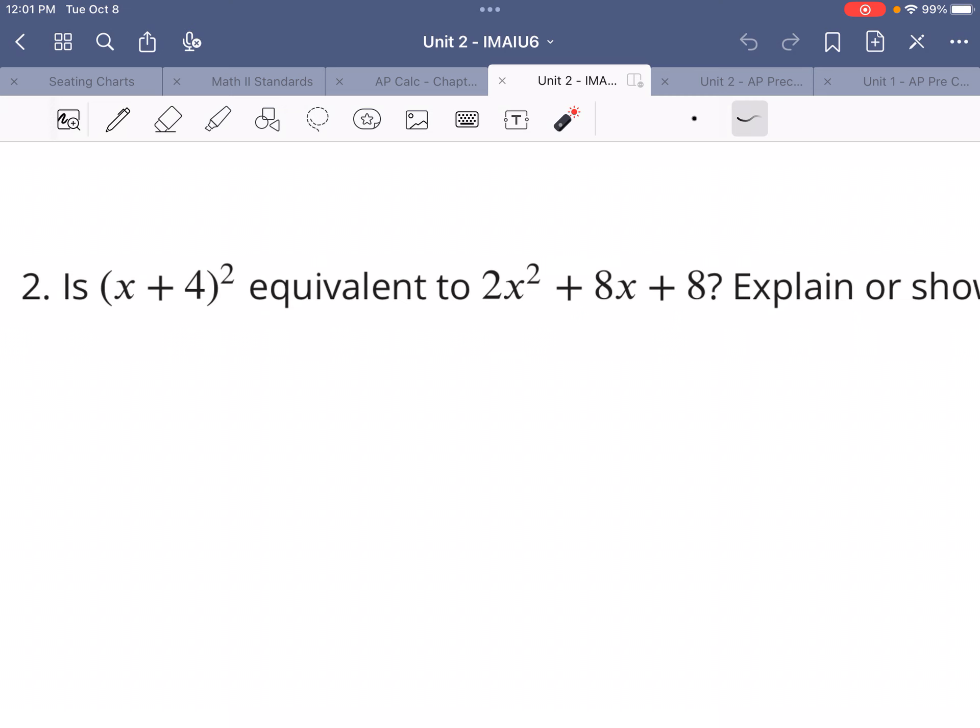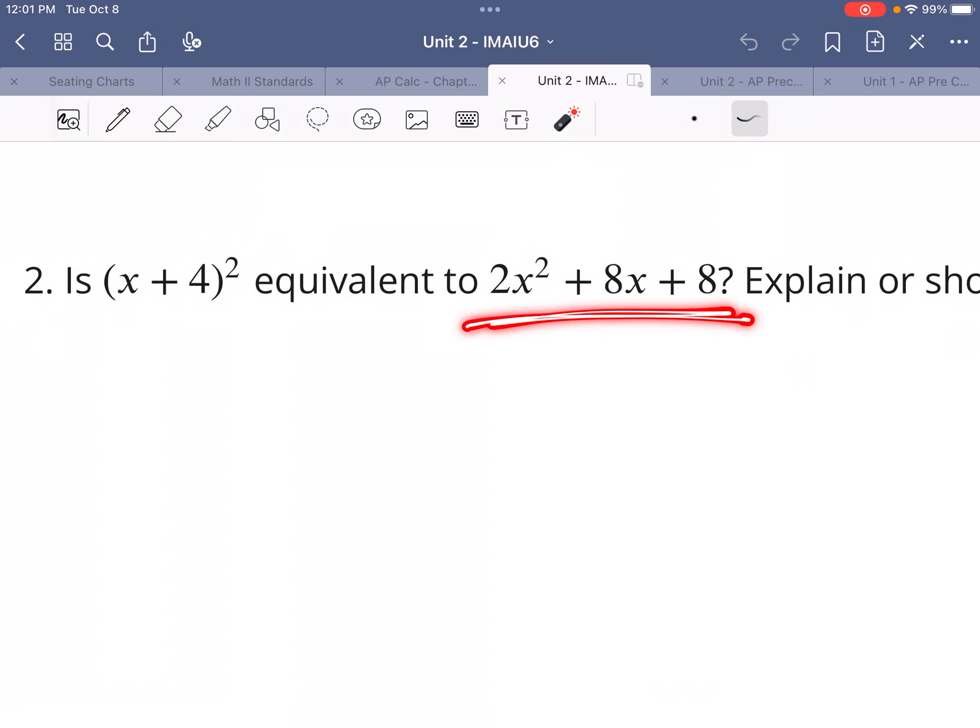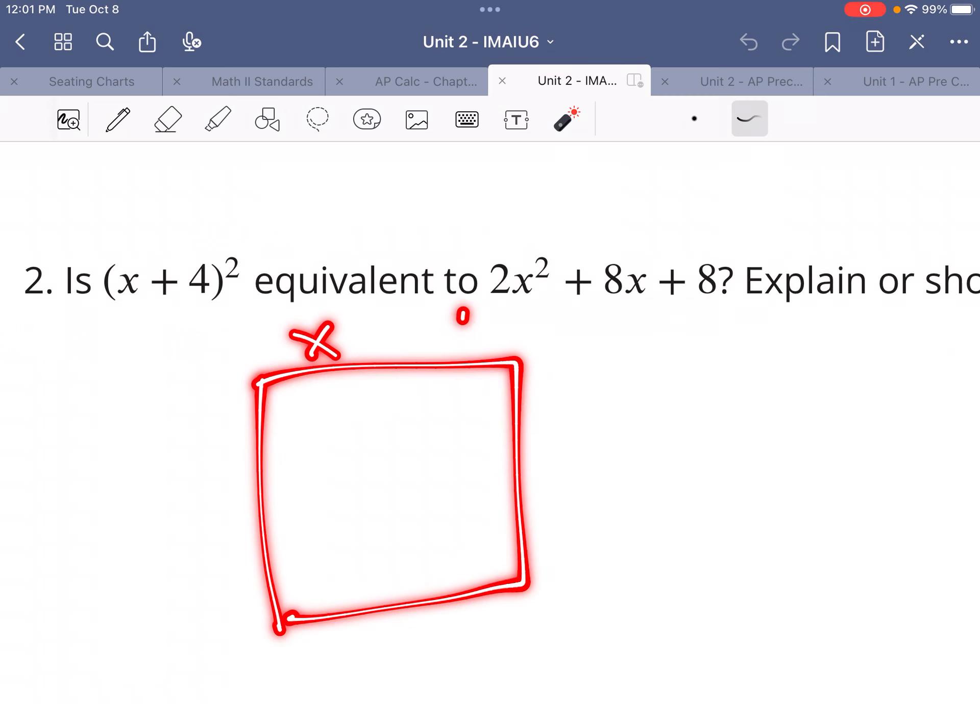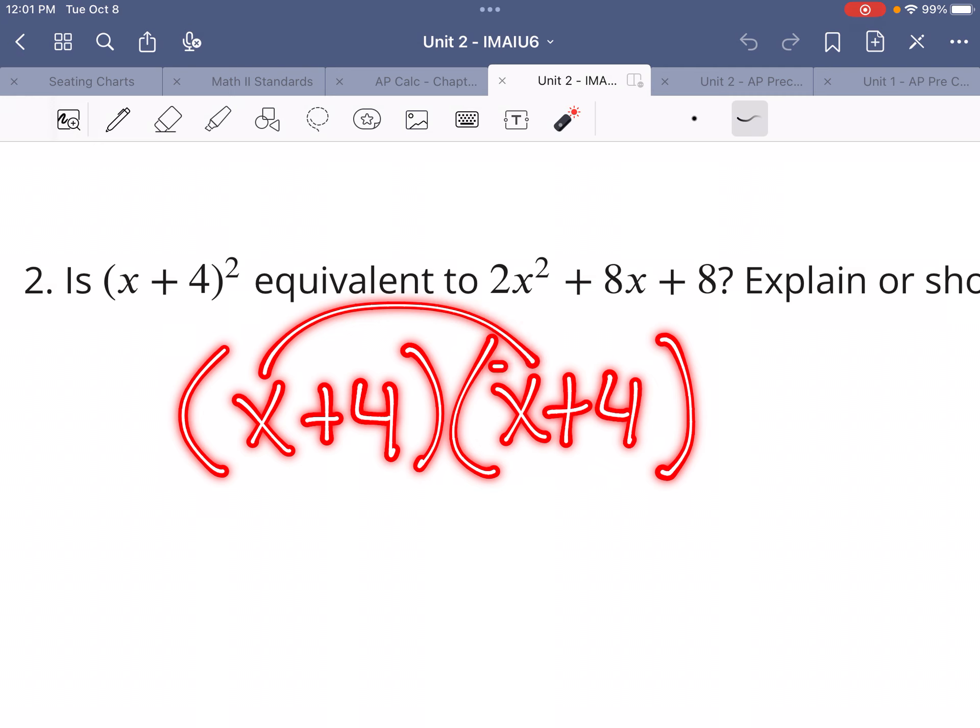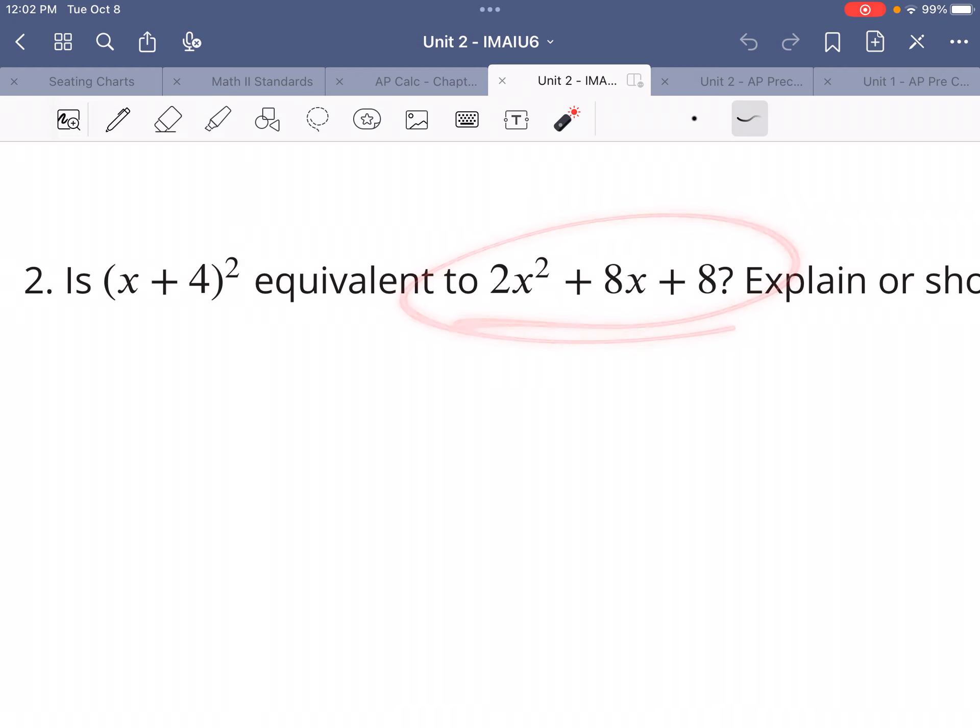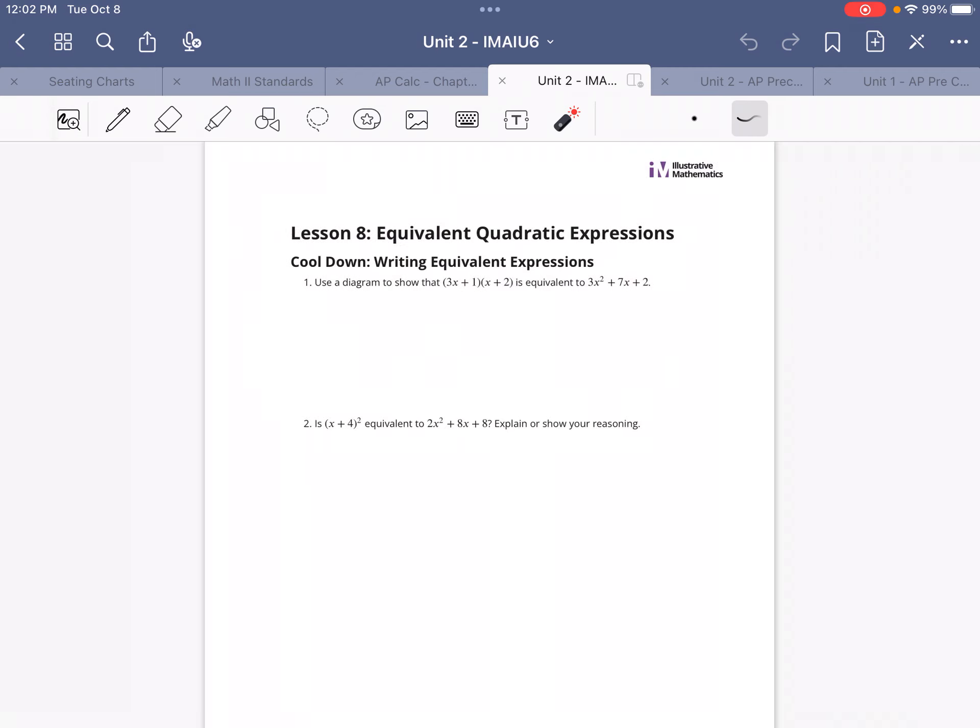Number 2, is (x + 4)² equivalent to that? Well, you could draw a diagram again with x, 4, x, 4. Or, (x + 4)² just means (x + 4)(x + 4). Think about using the distributive property the way that we talked about for this particular lesson and see if it comes out to be equivalent to that. If you have any questions, let me know.